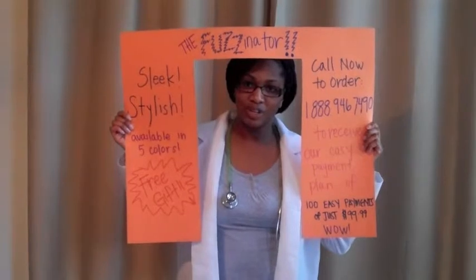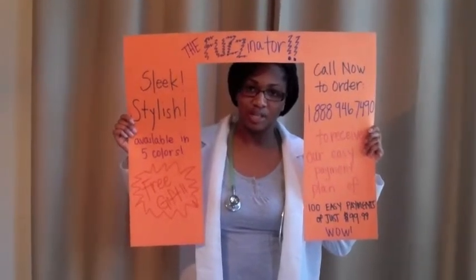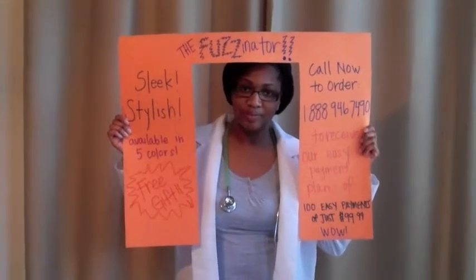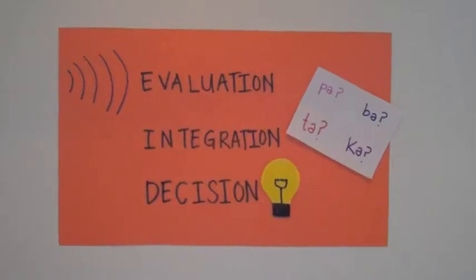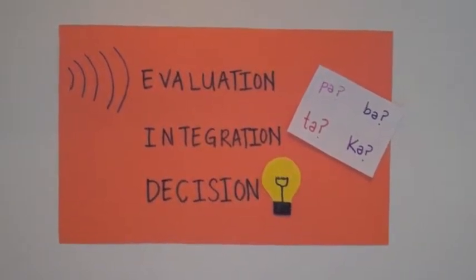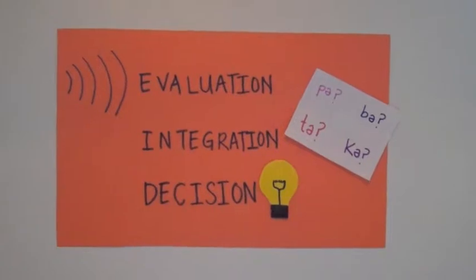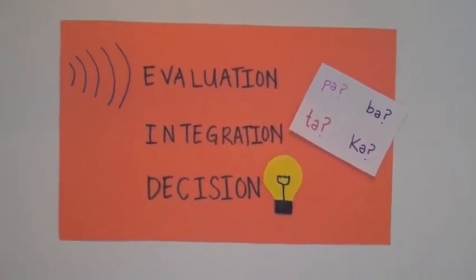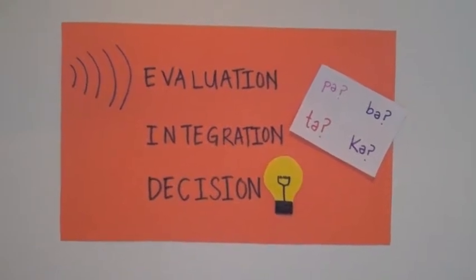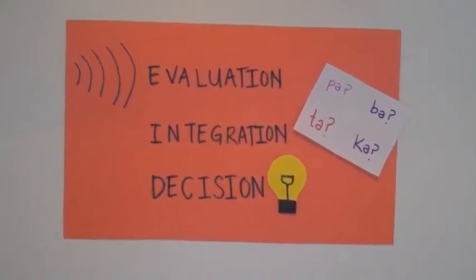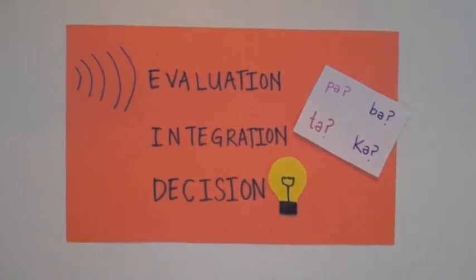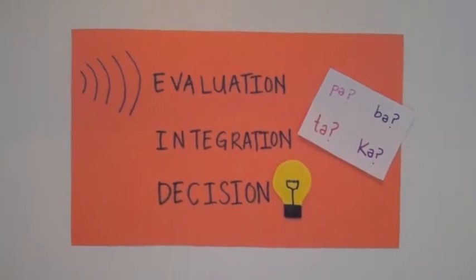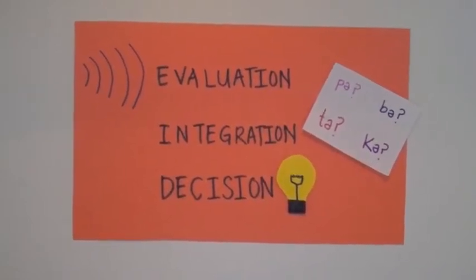According to Dominic Massaro, there are three steps to the perception process: evaluation, integration, and decision. Evaluation is when the particular features are analyzed — puh, tuh, kuh. Integration is when we match the features of the acoustic signal with the features of the prototypes stored in our memory, in an attempt to determine which prototype incorporates those features best. Decision is when the sound is classified as the pattern that best fits the features of the acoustic signal that was presented.